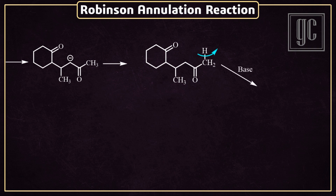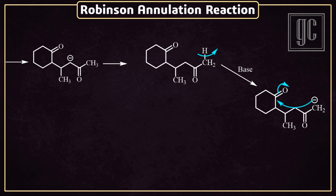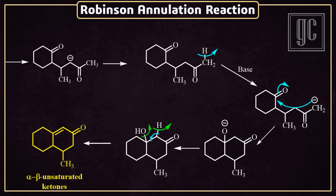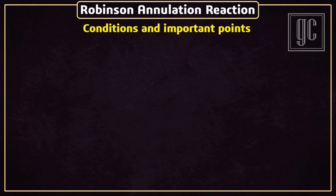Under strong basic conditions, one alpha hydrogen is removed and a carbanion is formed. This carbanion attacks the keto group of the cyclohexanone and a cyclic intermediate is formed. Followed by beta elimination, one alpha hydrogen and beta hydroxyl group leave the molecule, and alpha-beta unsaturated carbonyl compounds are formed as the final product.